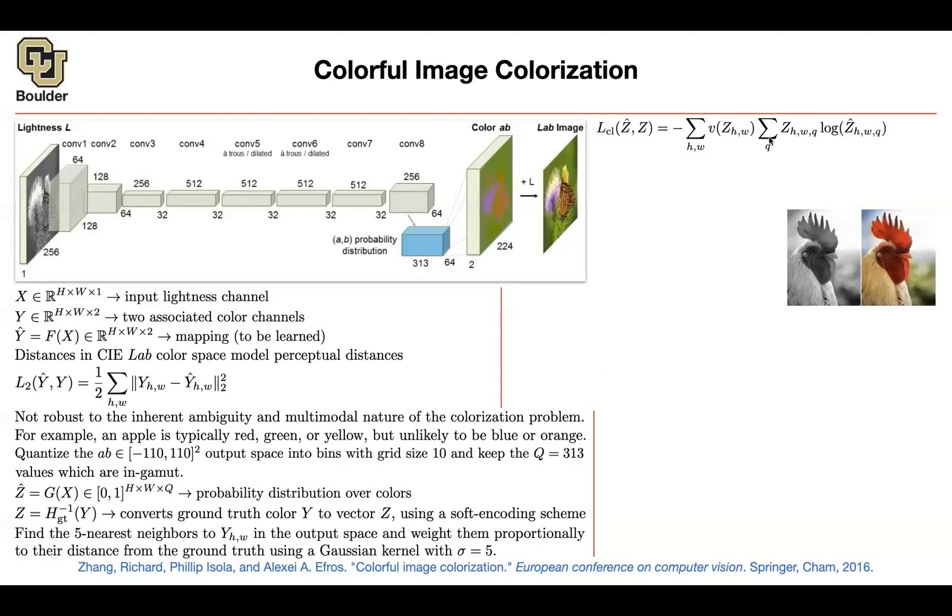For ImageNet, you had 1,000 images per each class. That was a balanced data set. This one is not balanced. Why is that? Because after quantization, in your images, there are going to be a lot of pixels corresponding to the sky. So some of the colors are going to dominate.